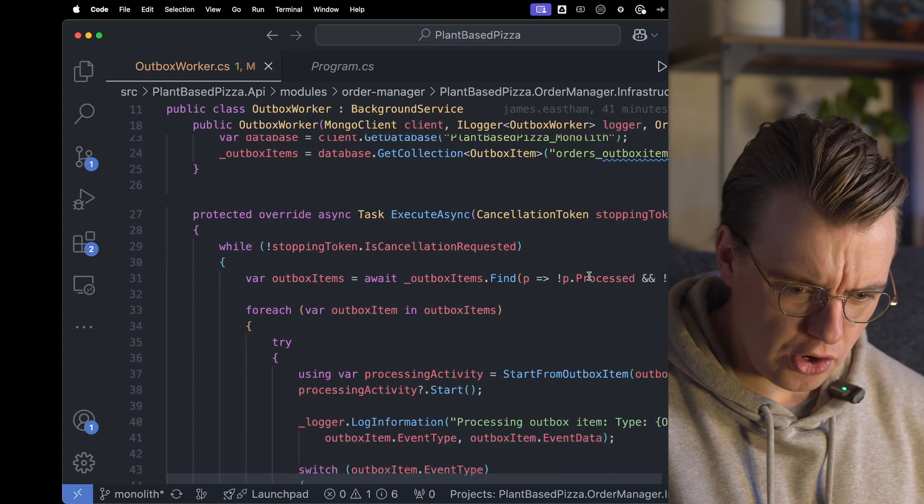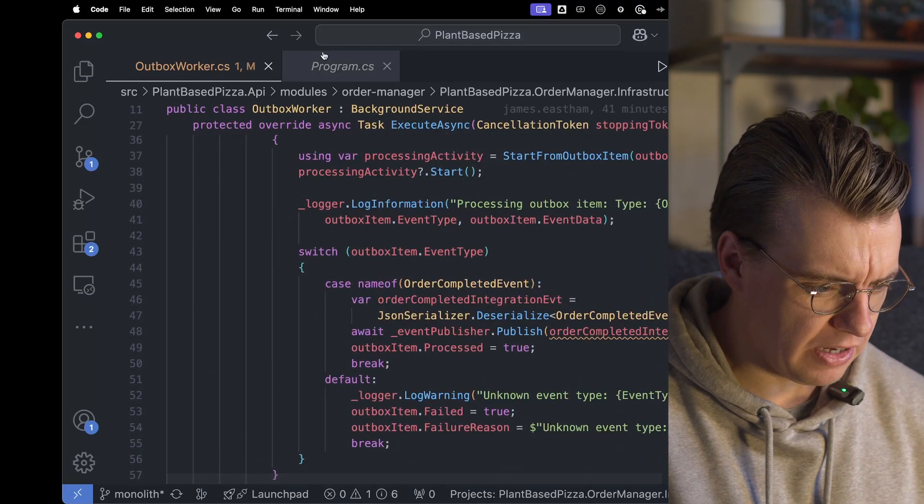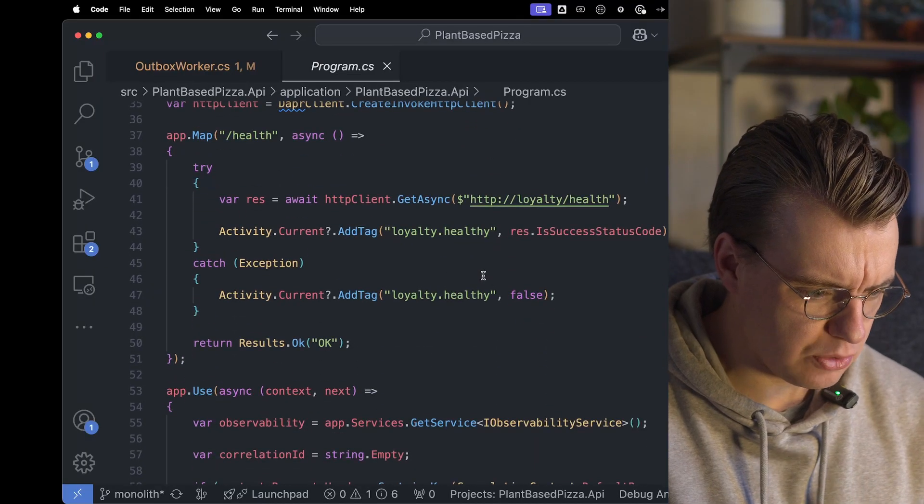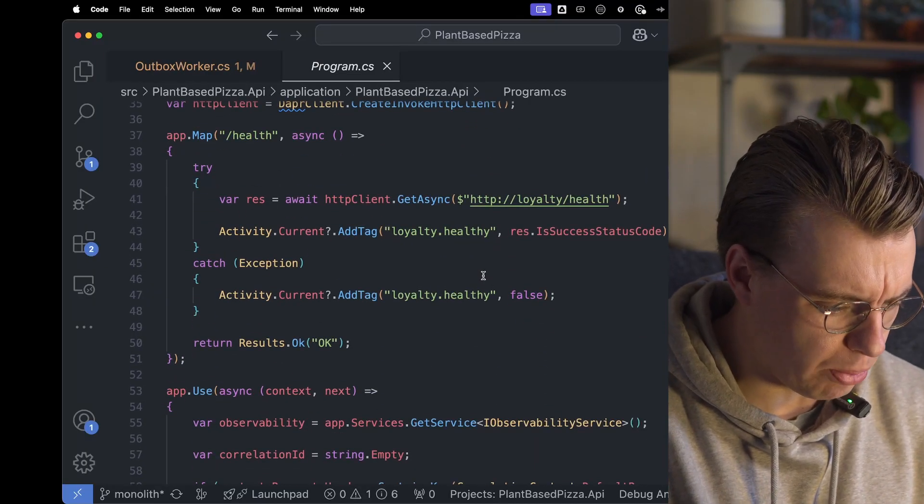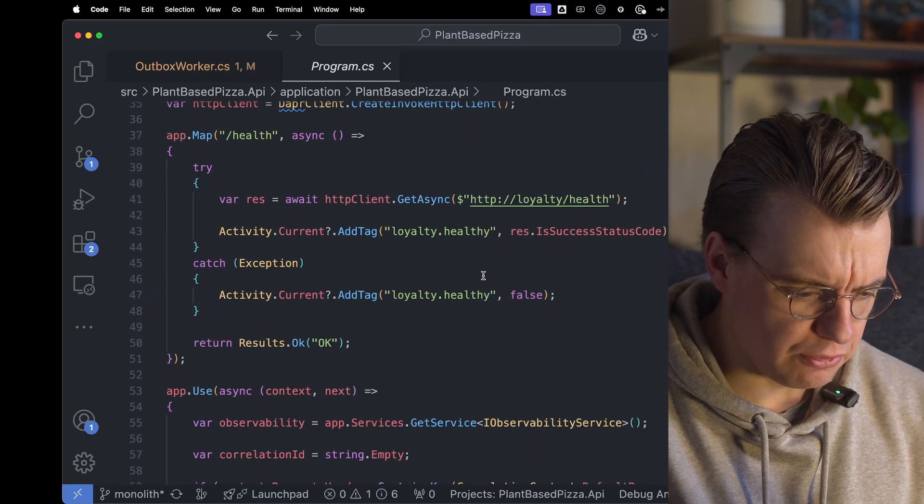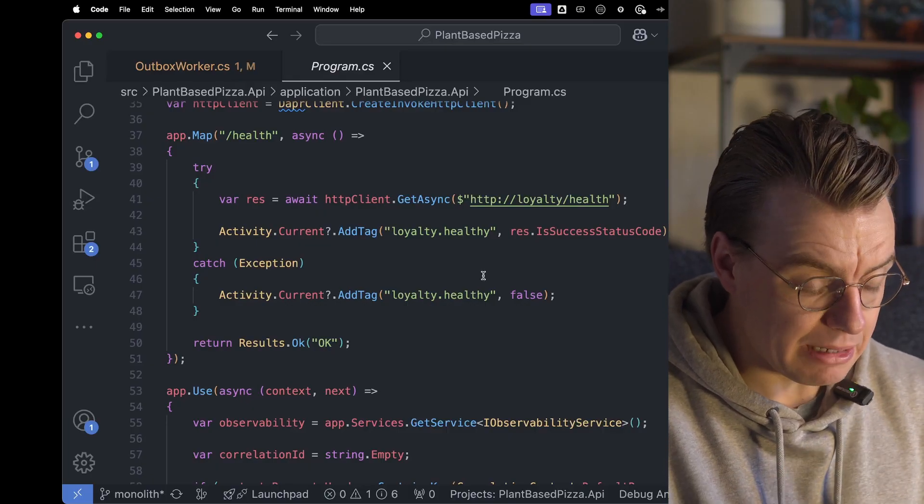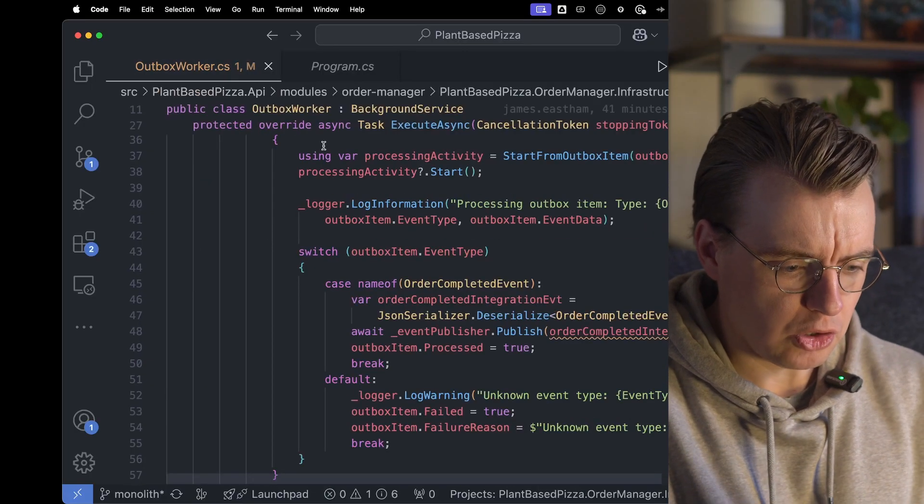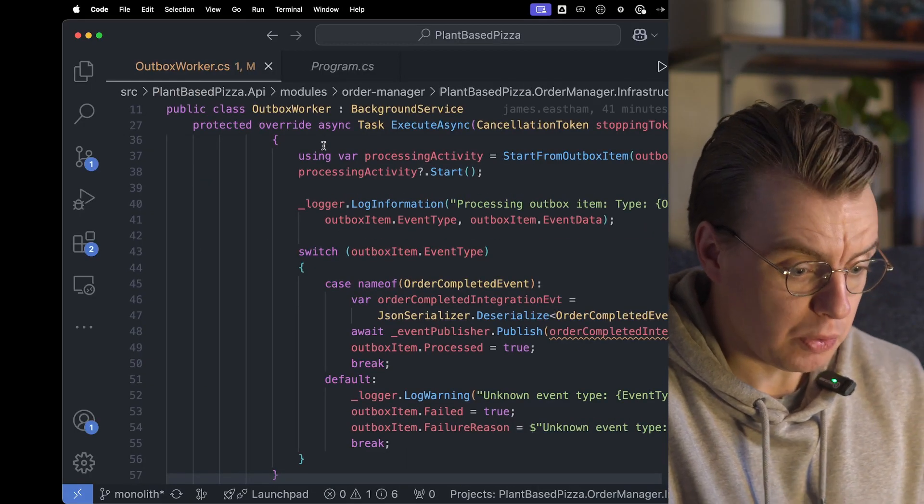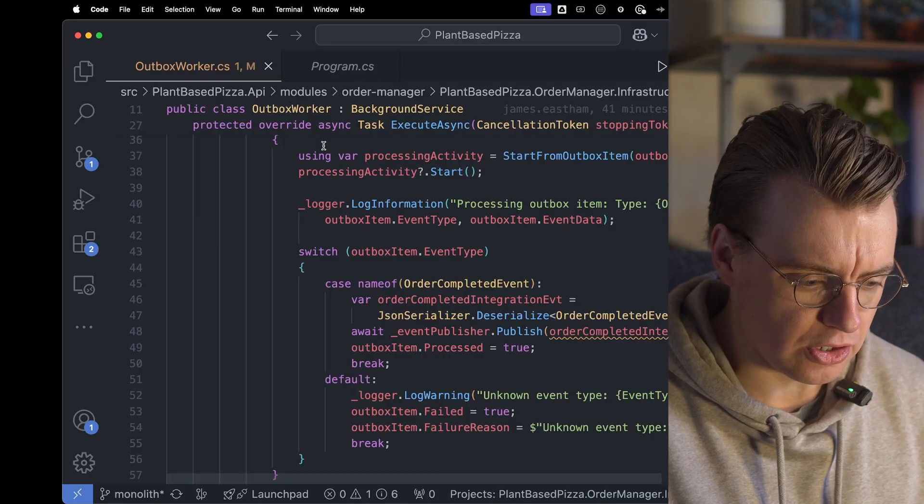Right, so I've got my background worker to work through my outbox and publish events, and I've got my synchronous API ready to go. But these two applications need fundamentally different things. I want my API to be reliable and there for my users, whereas I want my outbox worker to be efficient. I don't want it doing work when there is no work there to be done.